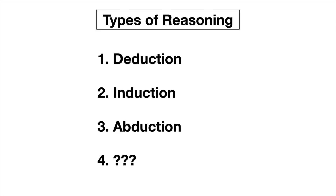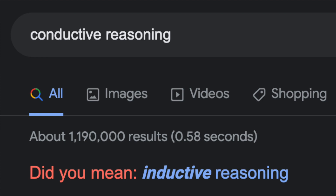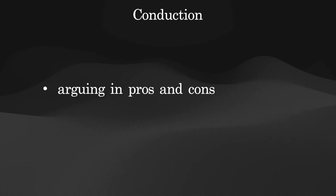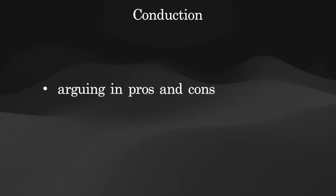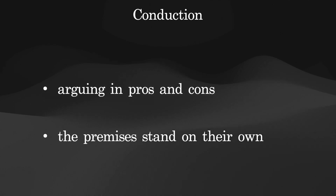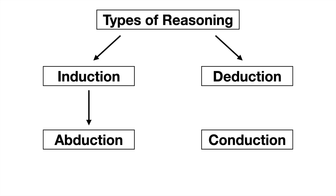The fourth type of reasoning is conduction. It isn't that widespread of an idea, and it isn't agreed upon that it truly counts as its own type of reasoning in the same way that deduction, induction, and — to some extent — abduction do. The basic idea, as it's most often put, is that conductive reasoning involves arguing in pros and cons. You have premises both for and against the conclusion, but you weigh them up to decide which side is stronger. Another component of conductive reasoning is that the premises stand on their own, rather than leading into each other or relying on each other. It also seems to me that conductive reasoning can be thought of as induction, or even that abduction is just the same thing.